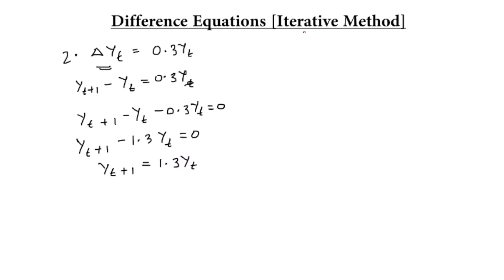As we know, this is an iterative method. So the first thing we will do is put the value of t equal to 0. Then this equation becomes: y1 is equal to 1.3·y0.